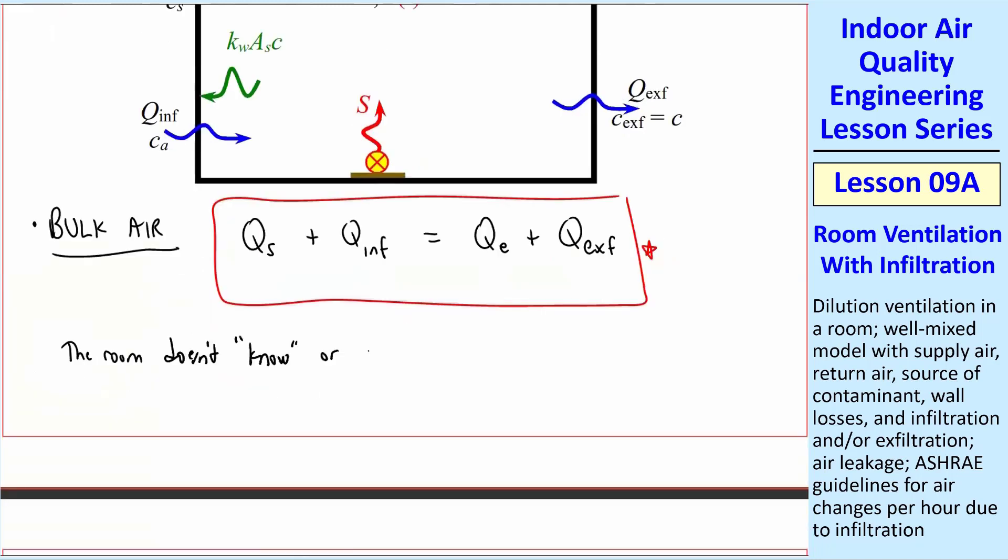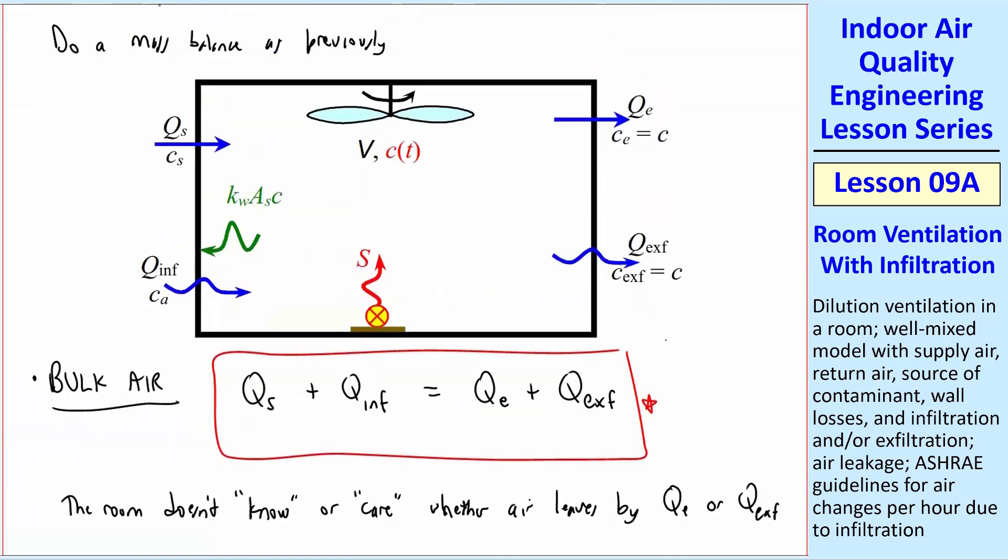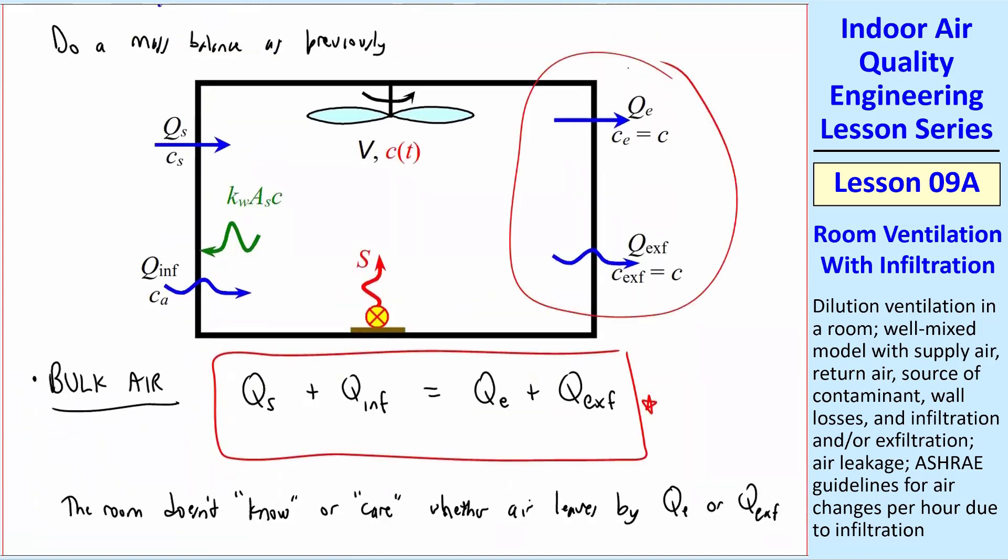The room doesn't know or care whether the air leaves by Q_E or Q exfiltration. What I mean by that is this. If you look at these two outflows, they're both at the C inside the room. So if you think about it, from a mathematical point of view, as we're analyzing this room, suppose the room is at very low pressure compared to the outside. So there's no exfiltration. So all the air has to come out through the normal exhaust. Or suppose your exhaust is blocked somehow, and whatever you're forcing in here plus whatever comes in through infiltration is going to all have to come out through exfiltration. But typically it's a combination of these two.